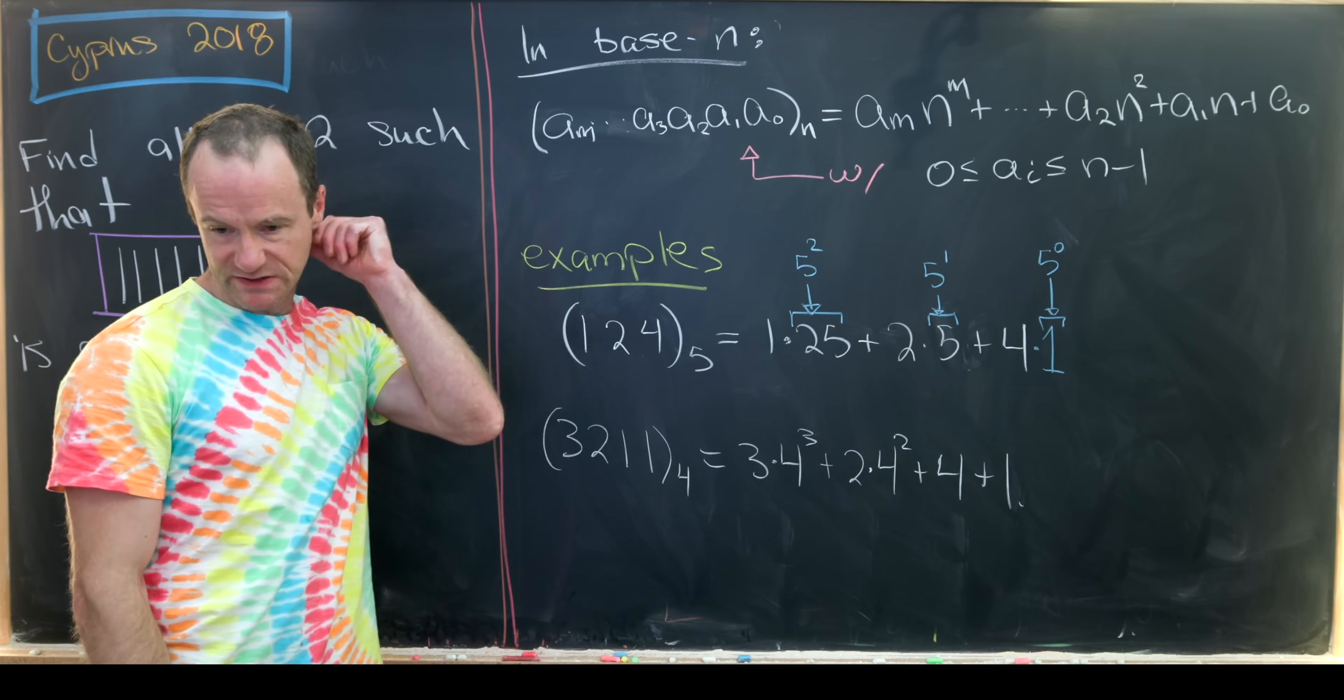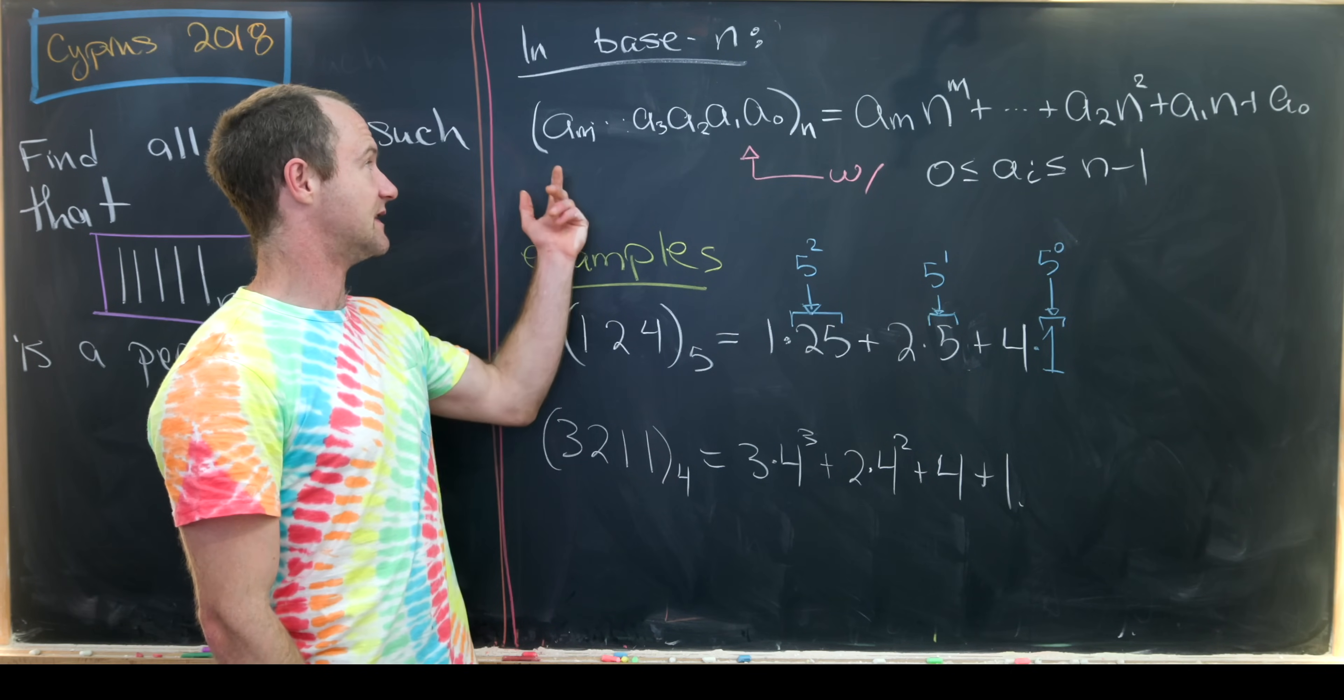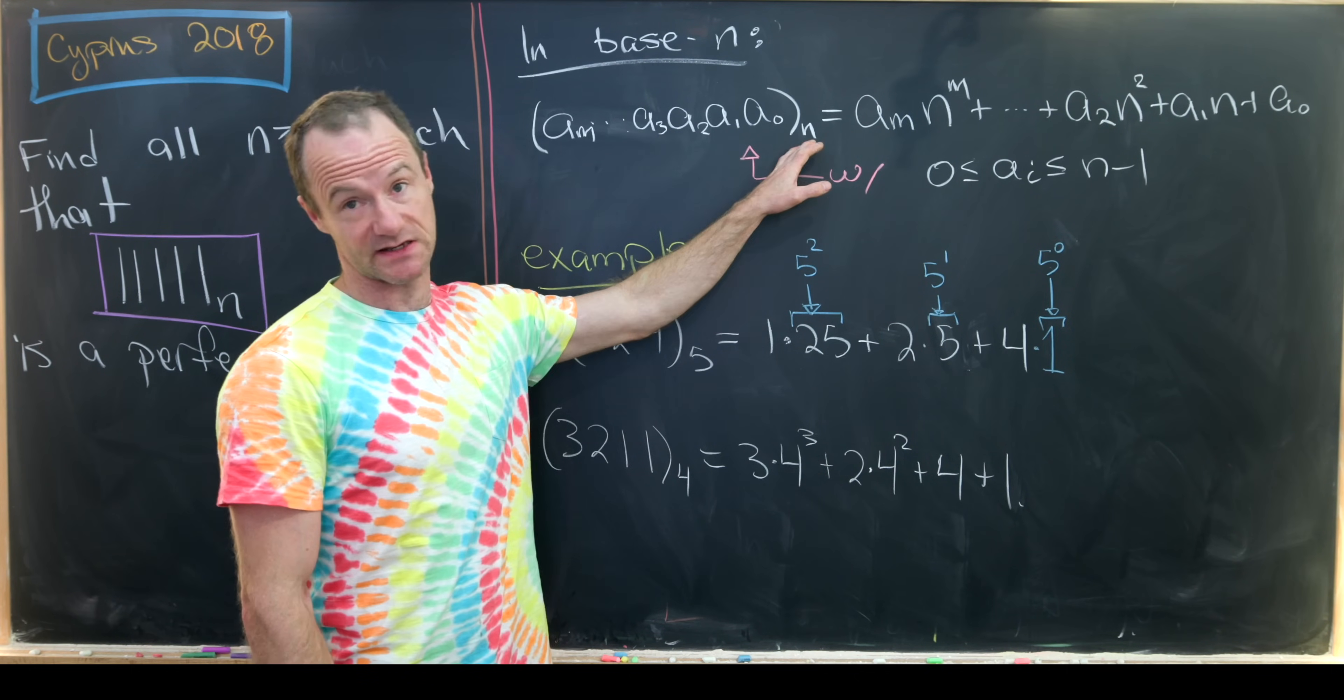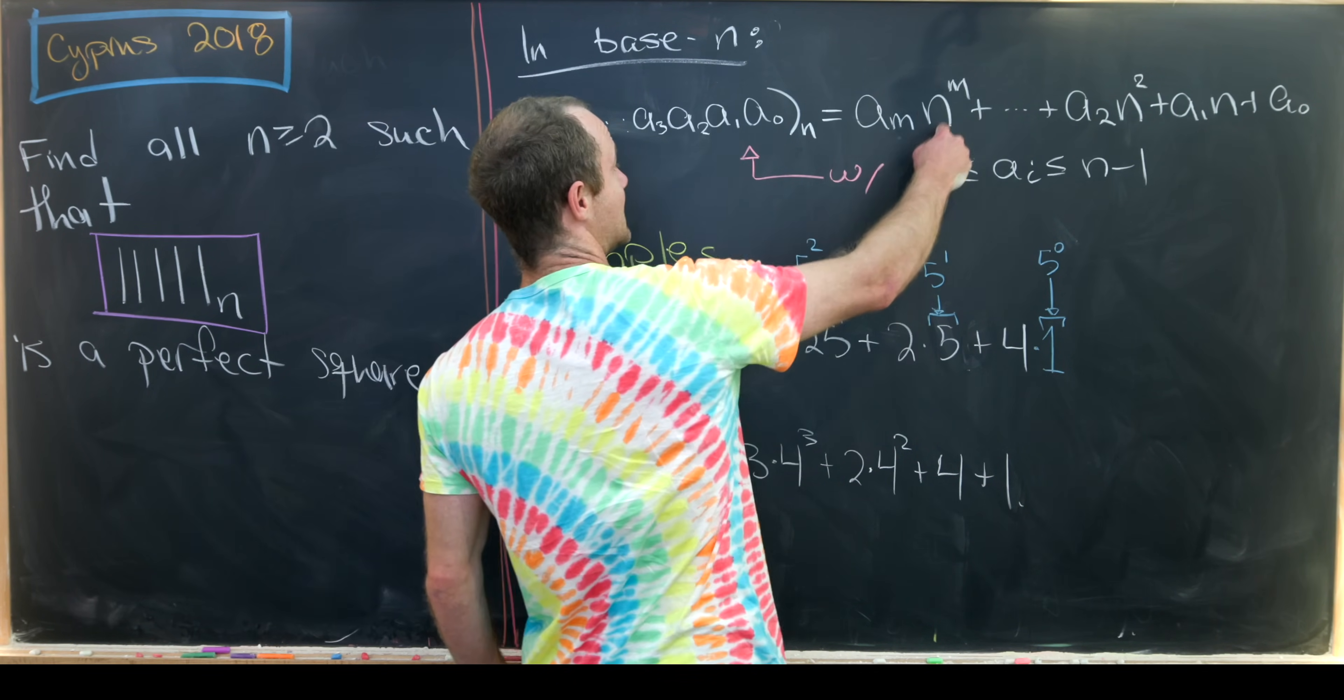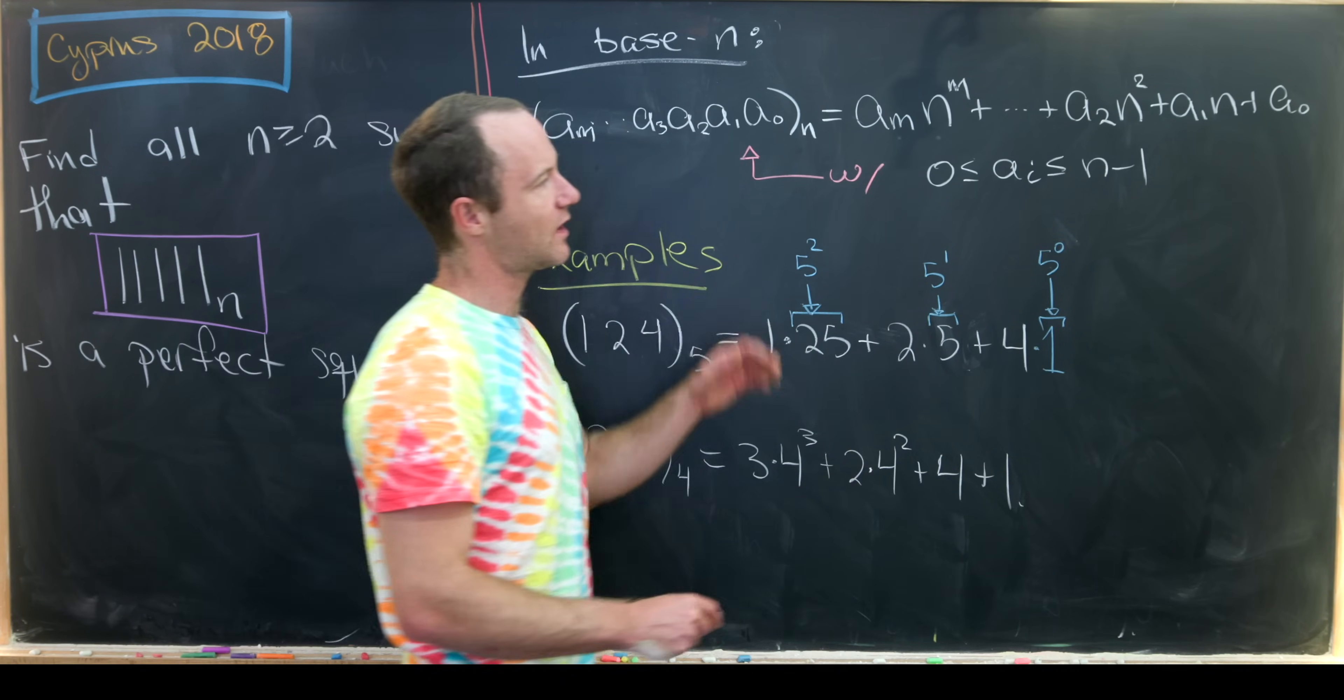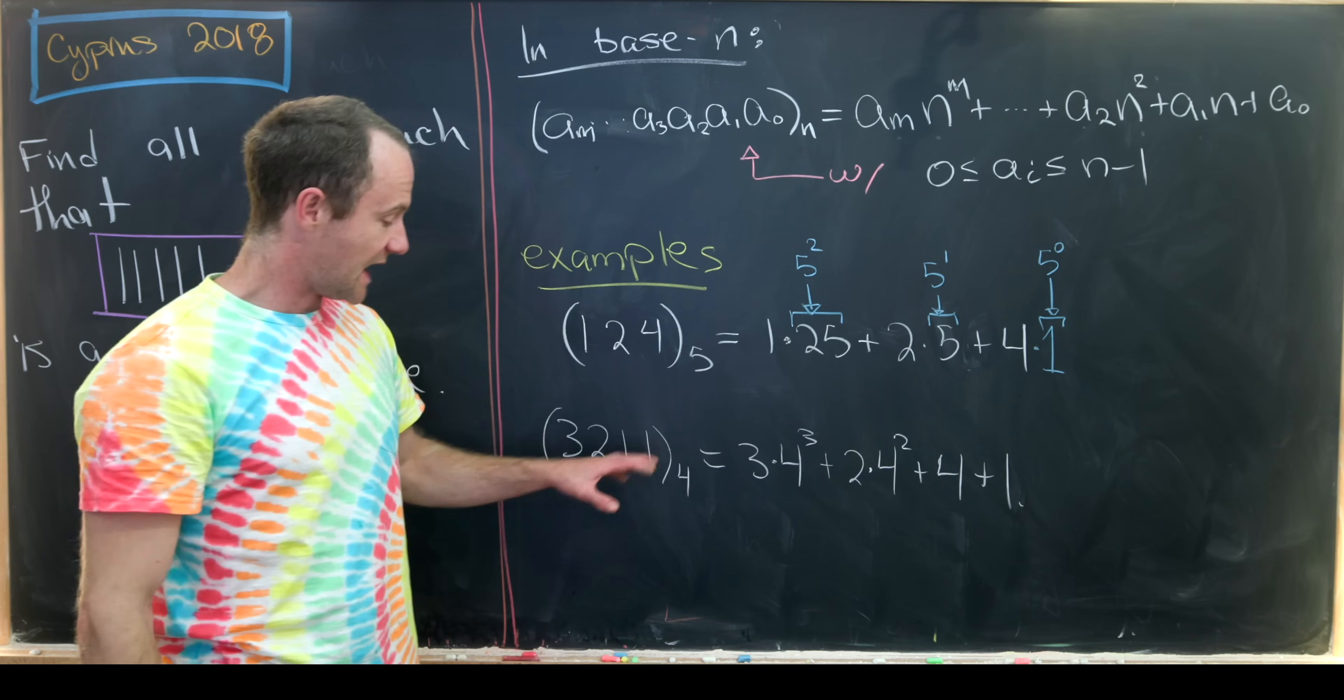So let's just recall what it means to write a number in base n expression before we get started. So a number written in base n that has digits a_m, a_{m-1}, all the way down to a_3, a_2, a_1, a_0 base n, so that's what I have here, is the sum a_m × n^m plus a_{m-1} × n^{m-1} plus all the way down to a_2 × n^2, a_1 × n, plus a_0.